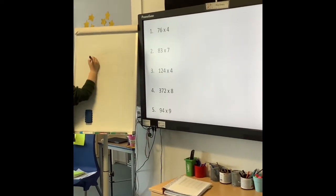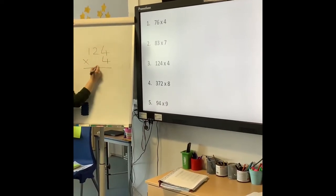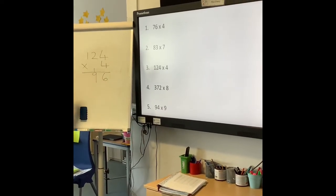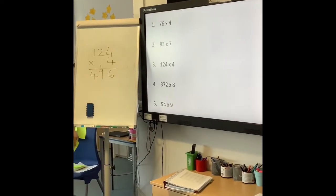Number 3, 124 times 4. 4 times 4 is 16, 2 times 4 is 8, add the 1 is 9. 1 is 10, I should say, not 1. And 1 times 4 is 4. The answer is 496.